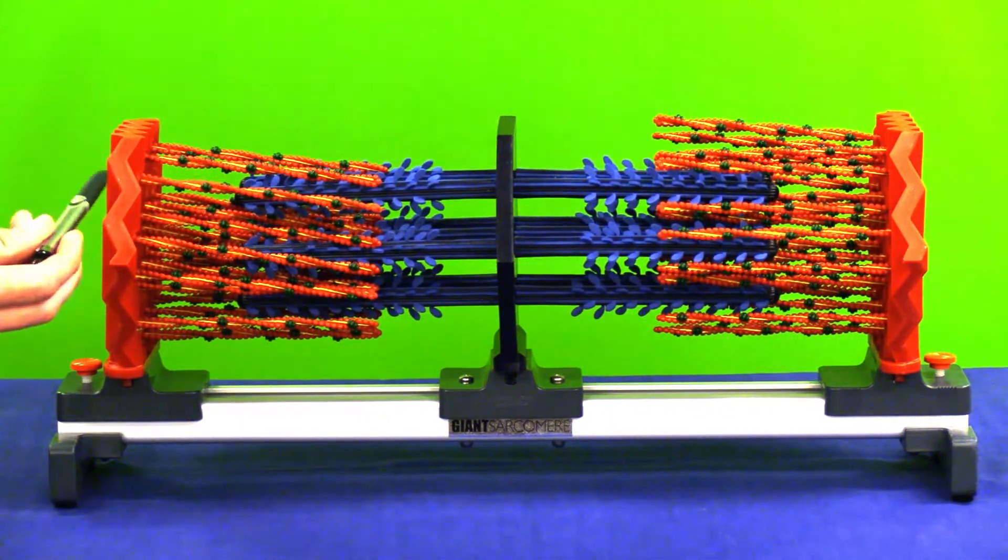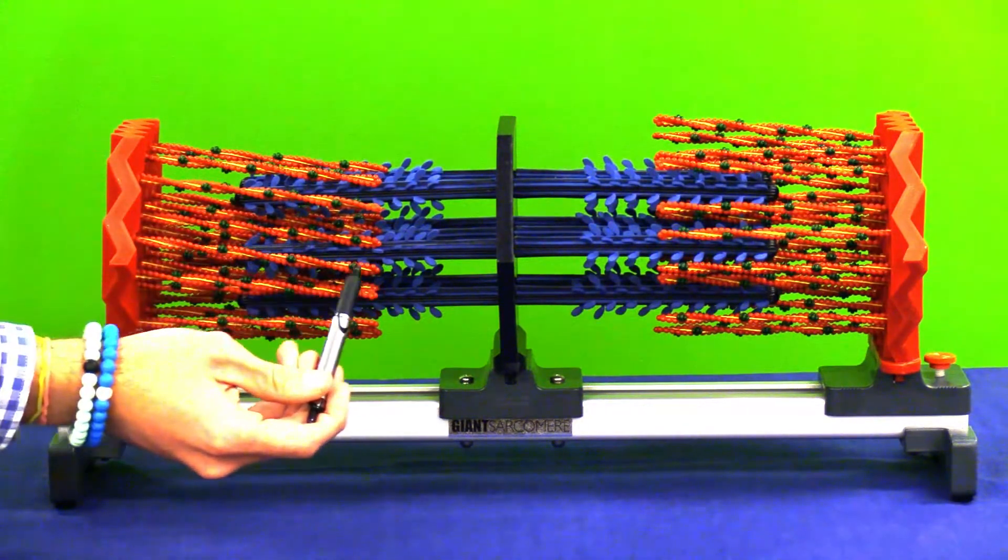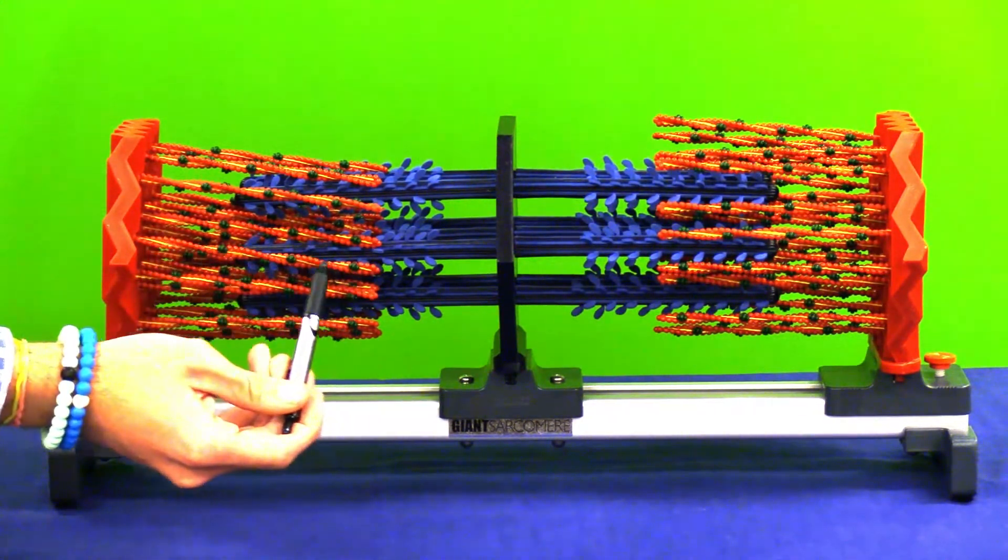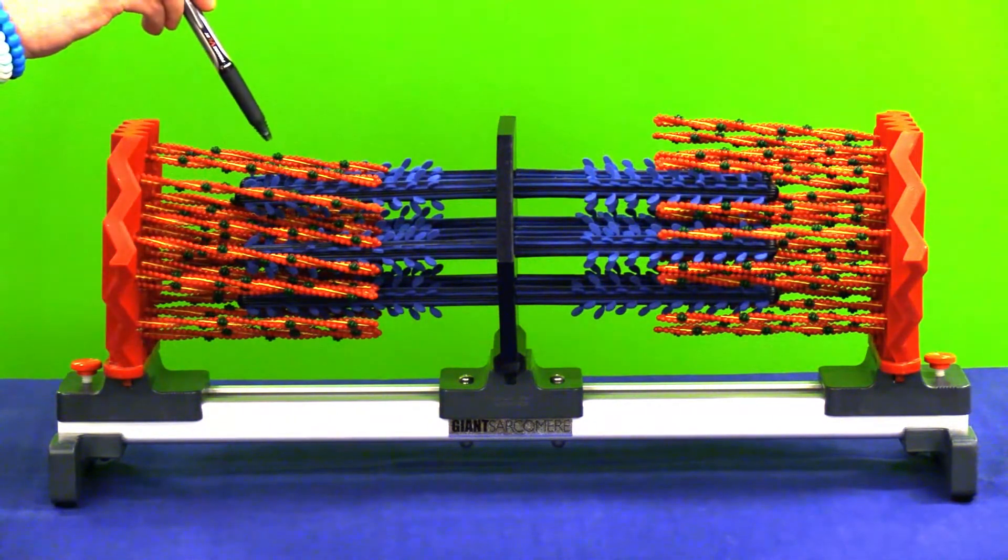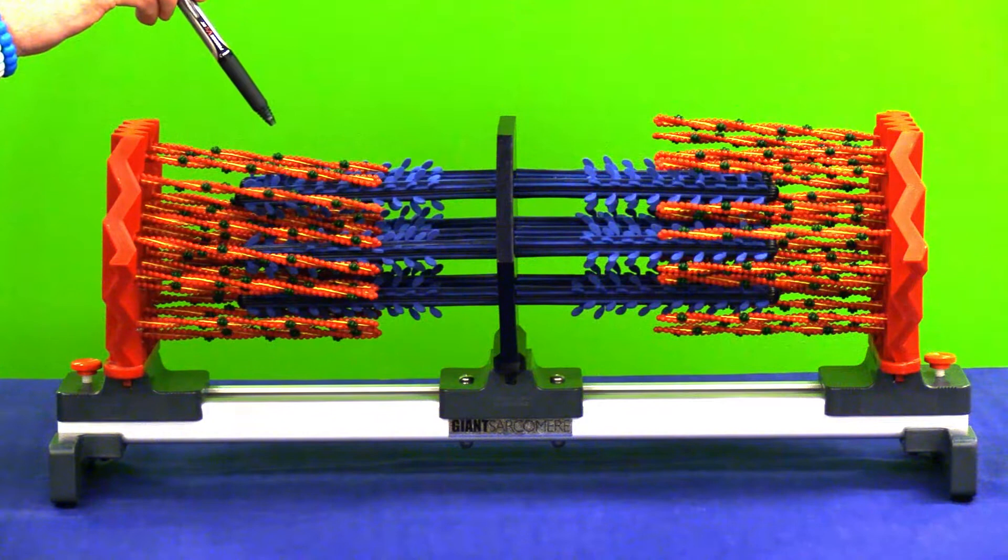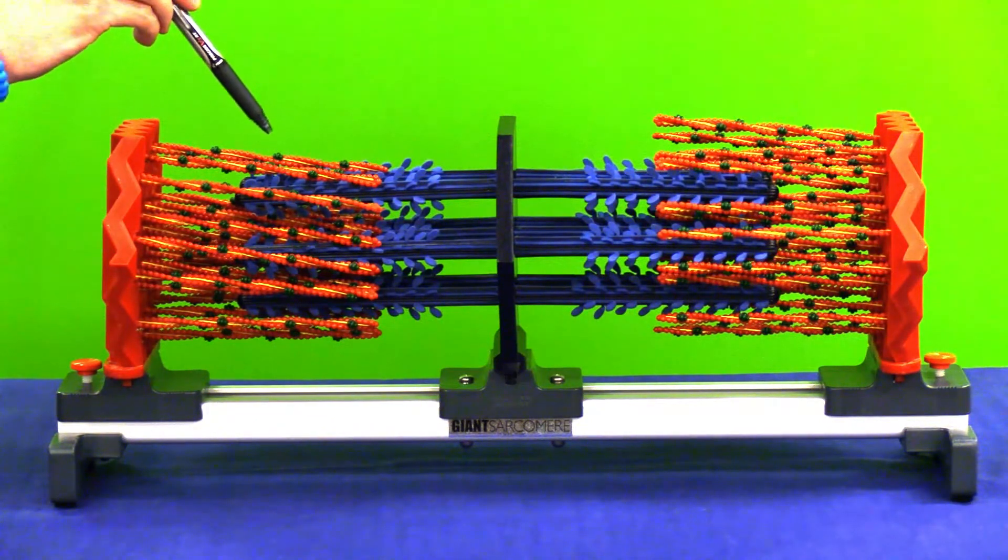As we go inside, these thin red bands or thin filaments are called actin filaments, and these thicker blue filaments are called myosin filaments. Those are going to be our two most important structures of a sarcomere.